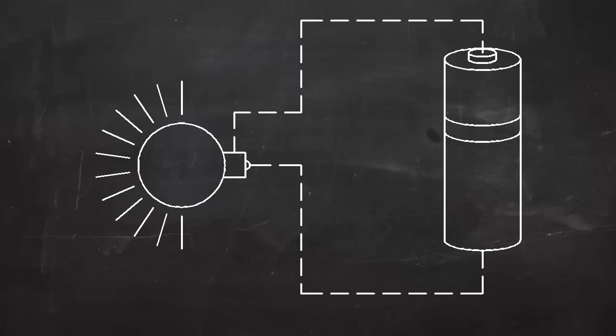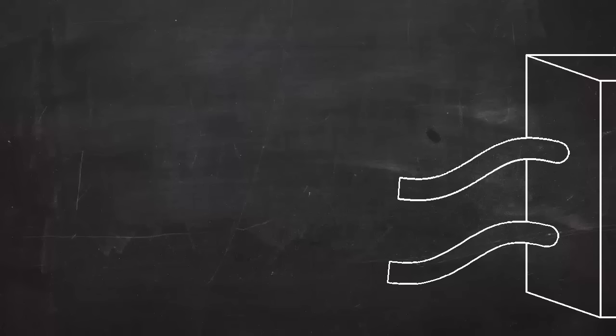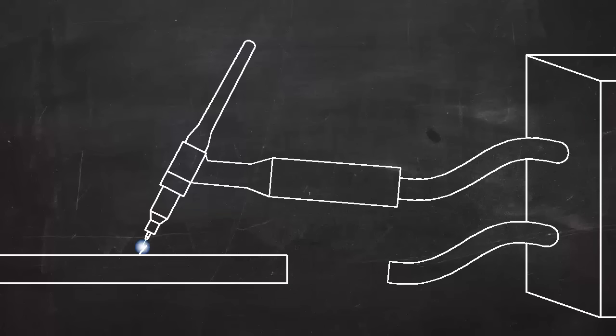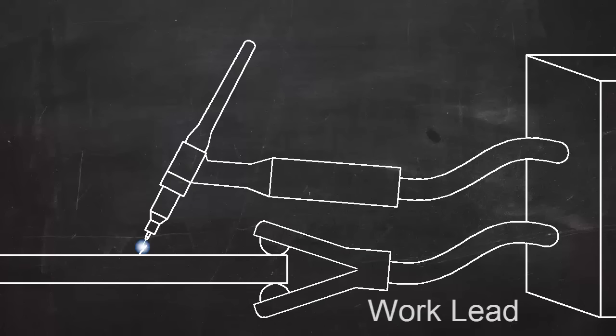In an electric circuit, the current flows in a loop. In TIG welding, the current has to flow in a complete circle from the machine, to the torch, into the work, and back to the machine. A work lead is clamped to the work to complete the circuit from the workpiece back to the machine.